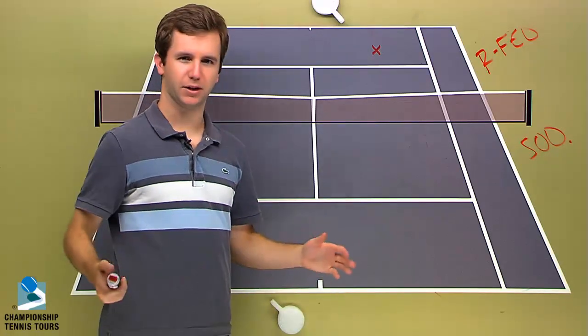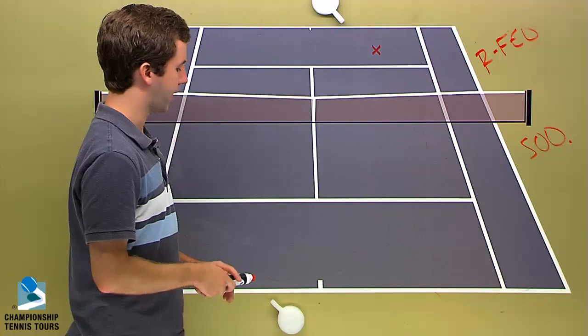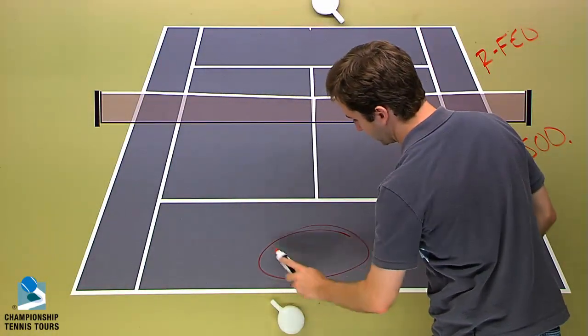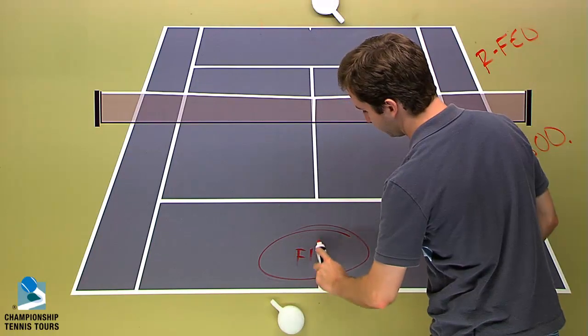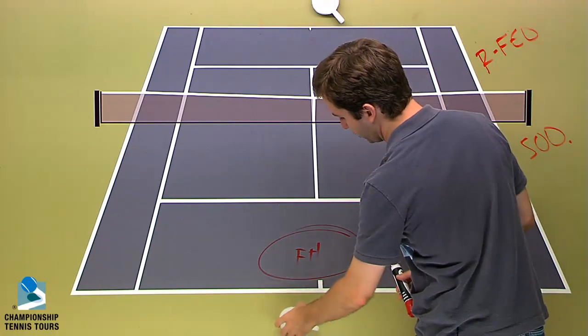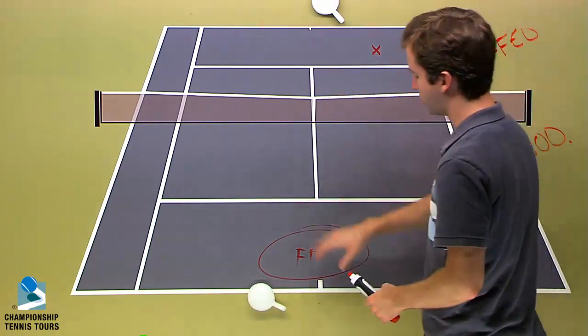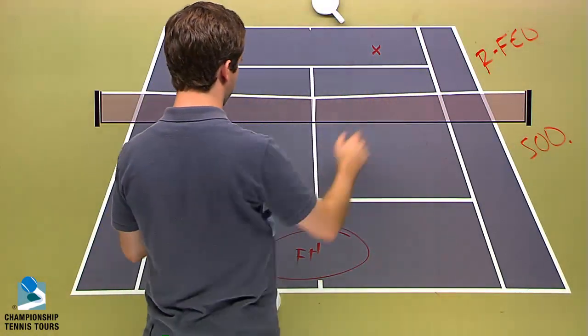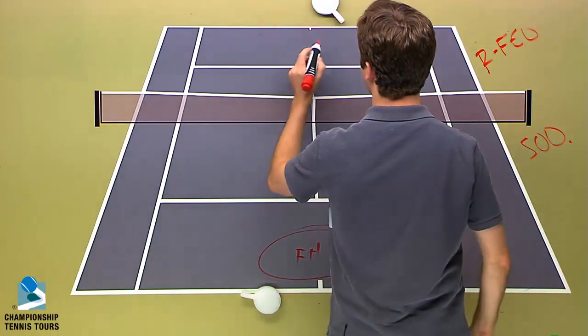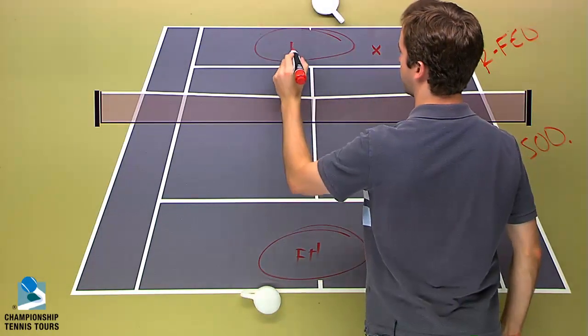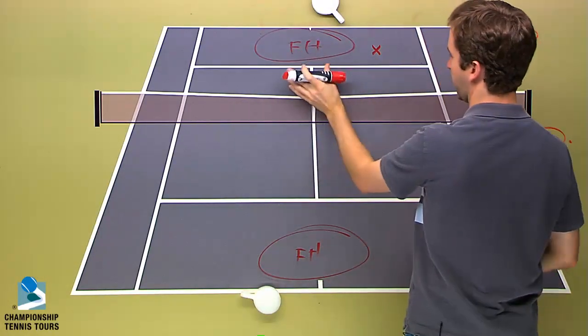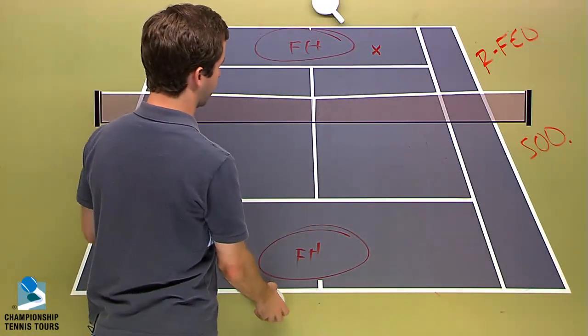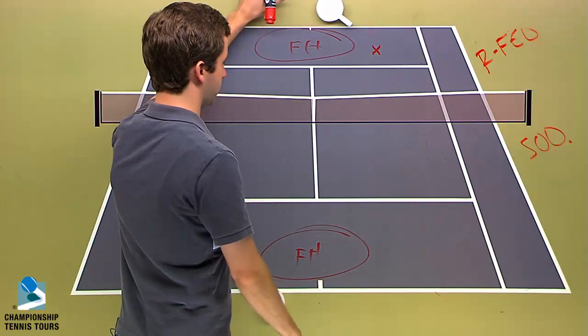Soderling of course likes to control a lot of rallies with his forehand, so you would think that maybe Soderling is looking for this area of the court to be on his forehand, which means he would be hitting a lot of inside out forehands. But he needs to prevent Federer from doing the same thing to him. So if we put Fed's forehand up here, this is the area of the court Federer wants to control. It's going to come down to a battle of who is able to get around their backhands and hit more forehands.